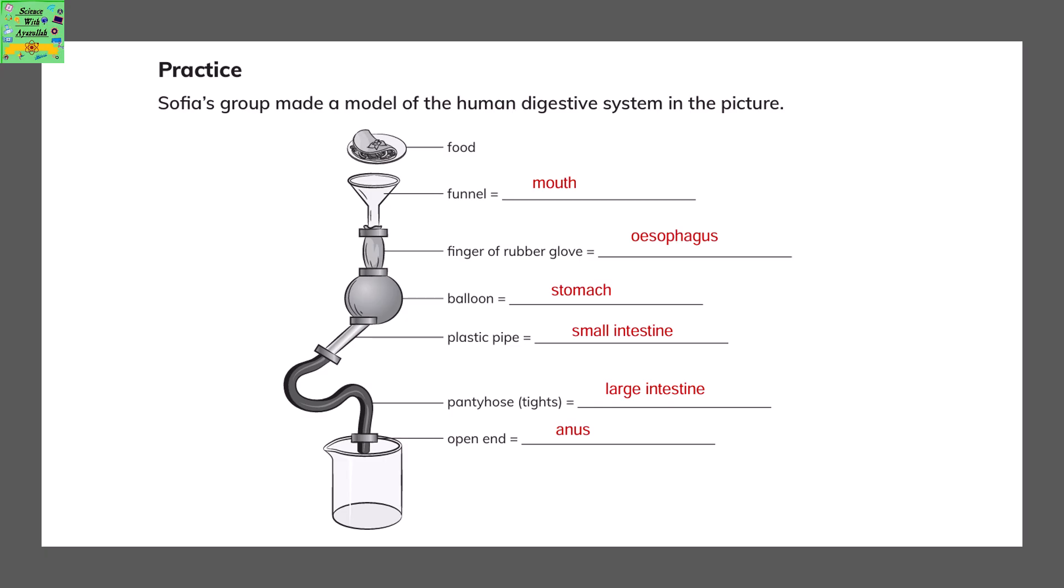A plastic pipe is attached which is the small intestine. And then there are pantyhose which are tights, that's the large intestine, and the opening end is the anus.